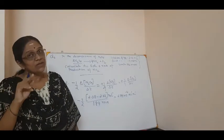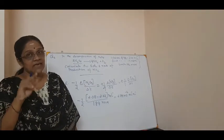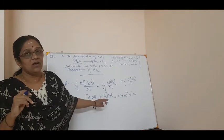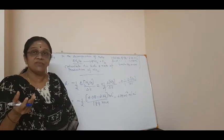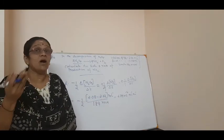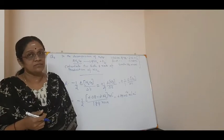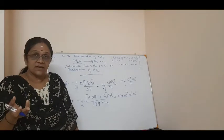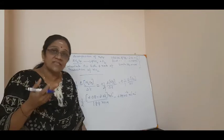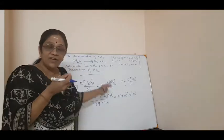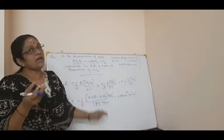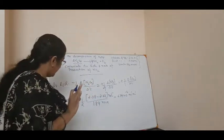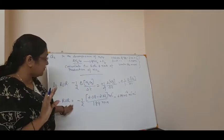If you want to convert to seconds, you divide by 60. Or if the question asks for hours, you can convert to hours. If nothing is asked and the time is in minutes, you can keep it in minutes — no problem. This is how you calculate the average rate of reaction.